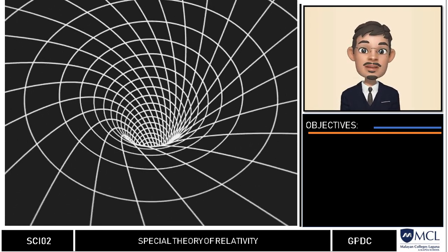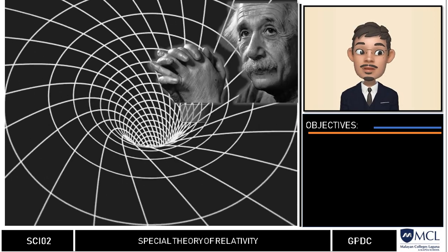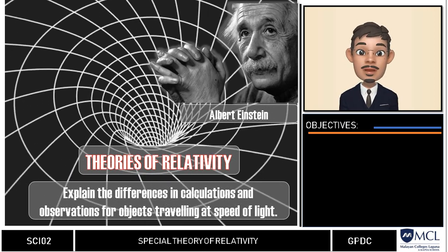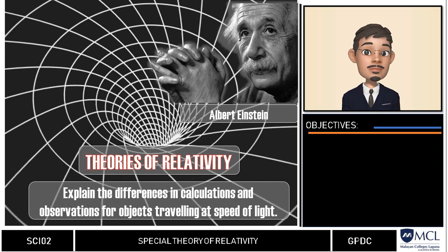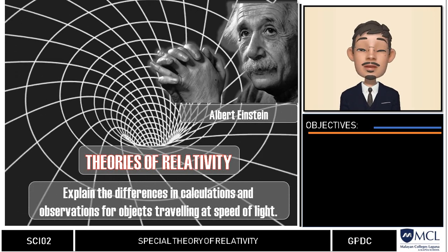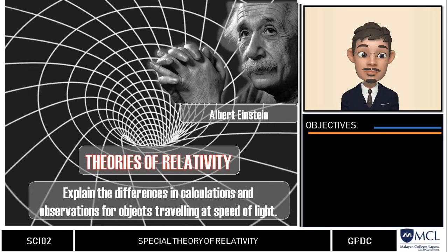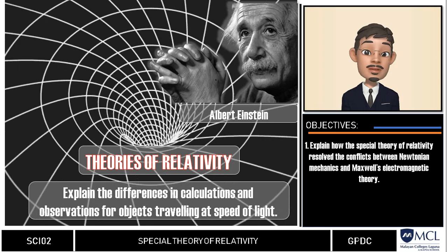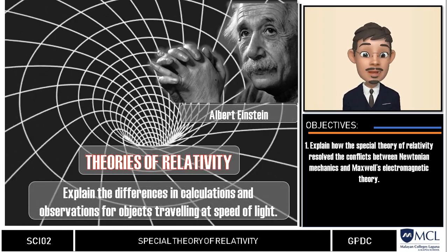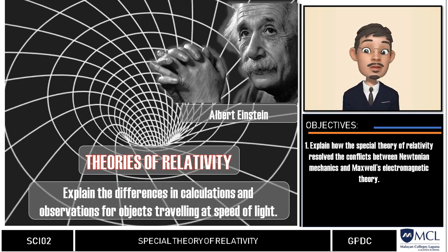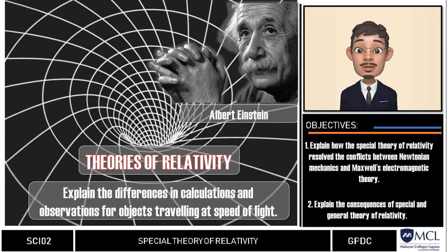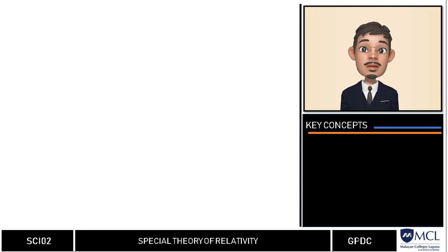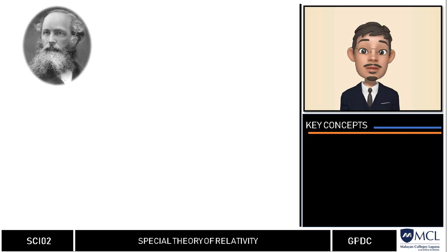Fortunately, Albert Einstein was able to come up with a set of theories called relativity that explains such differences in calculations and observations for objects traveling at the speed of light. In this video, we will explain how the special theory of relativity resolved the conflicts between Newtonian mechanics and Maxwell's electromagnetic theory, and we will explain the consequences of the postulates of the special and general theory of relativity.